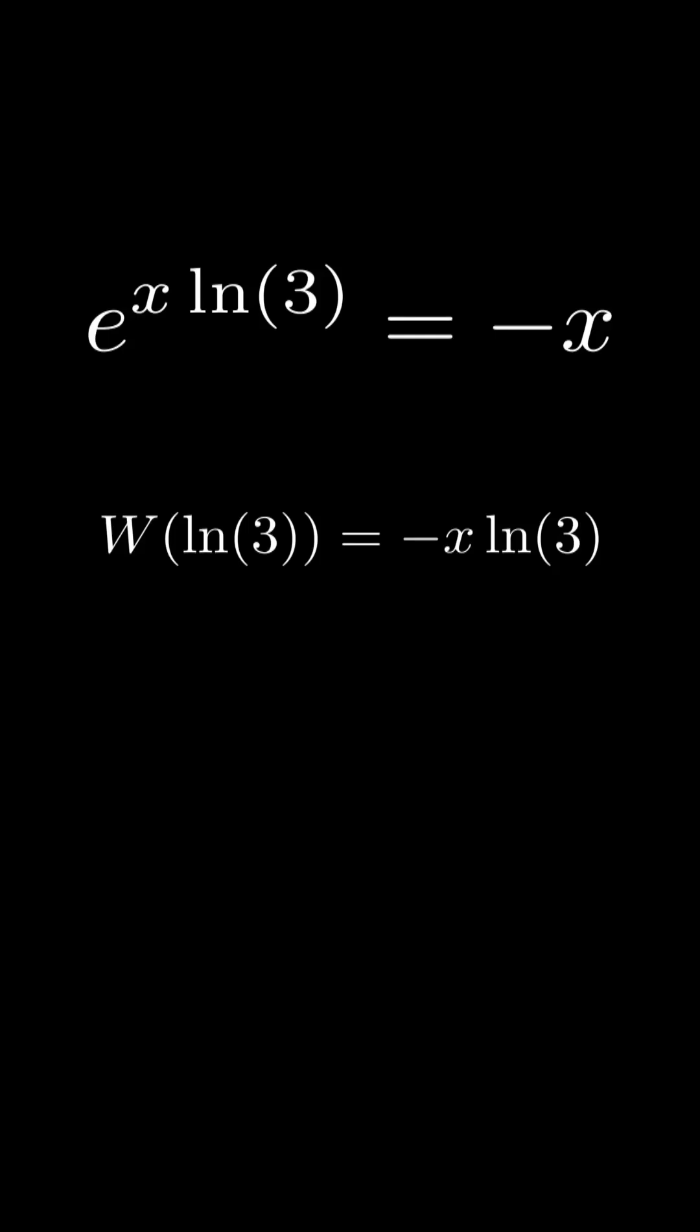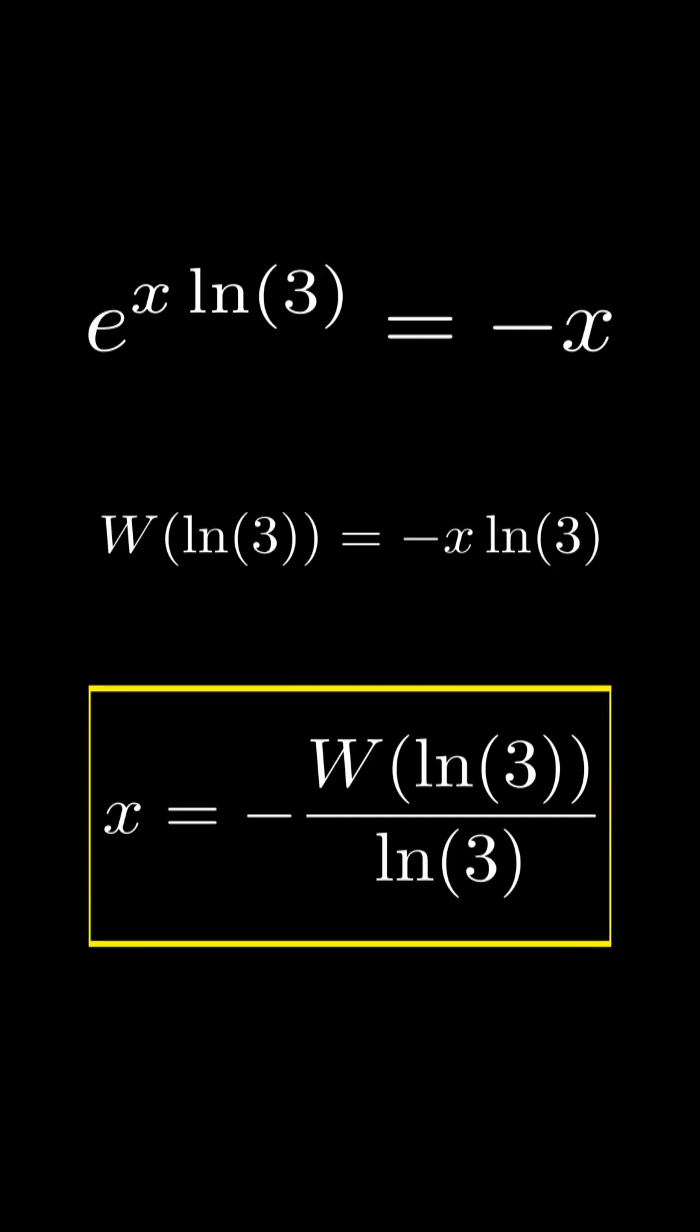Now just multiply the equation by negative 1 over natural log 3 and there you have it. X is negative W of natural log 3 over natural log 3.